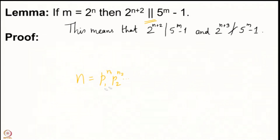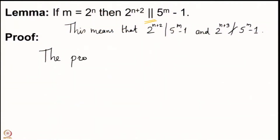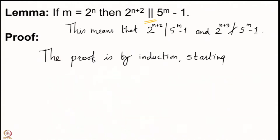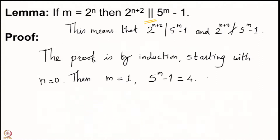We are now going to prove this result by induction. The proof is very simple, starting with n = 0. Then m = 2^0 = 1, and 5^m − 1 = 5 − 1 = 4. Clearly 2² is the exact power of 2 dividing 4, so the case n = 0 is done.